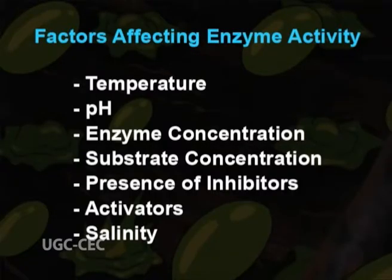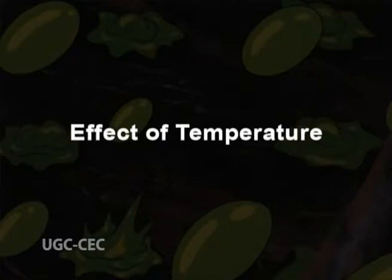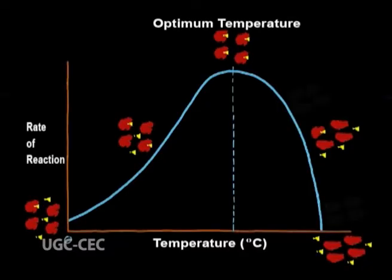Several factors affect the rate at which enzymatic reactions proceed. These are temperature, pH, enzyme concentration, substrate concentration, presence of inhibitors, activators and salinity. The first is the effect of temperature. Temperature is an important factor affecting enzyme activity. At 0°C, the enzyme action is slow because the movement of molecules is low; hence the collision frequency between the enzyme and substrate is low.